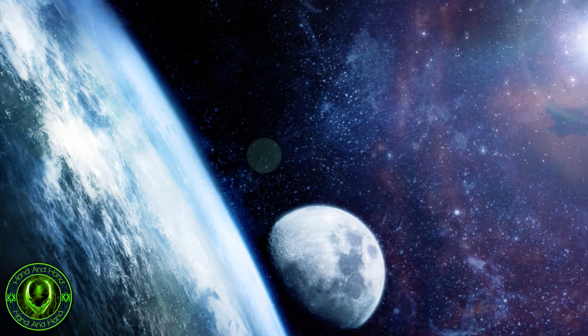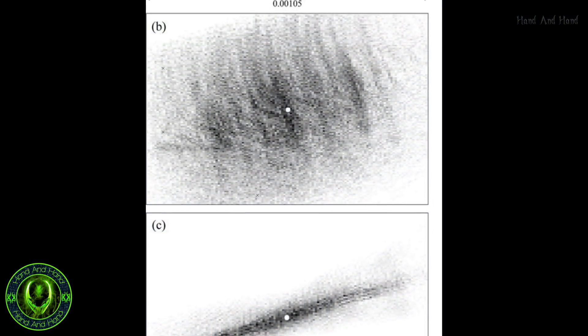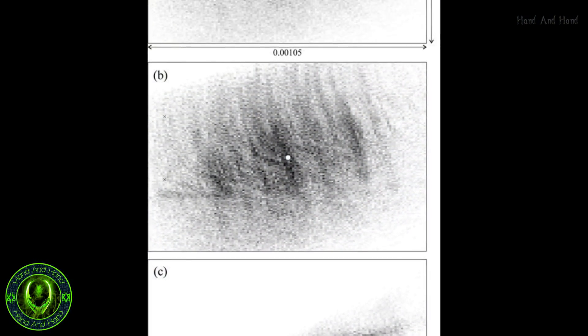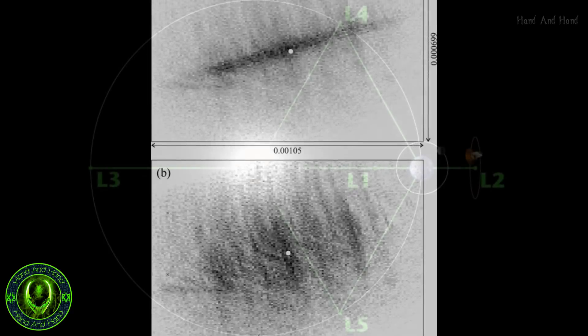Kordylewski first searched two of these points, L4 and L5, in the hopes of finding solid body moons in the 1950s. He tried to tell the rulers of Earth at the time that Earth had more than one companion.